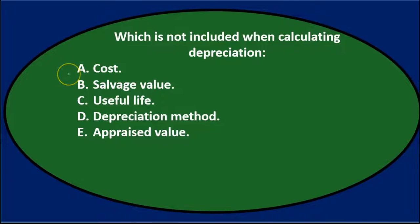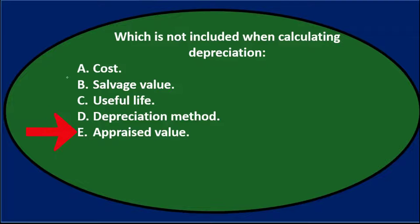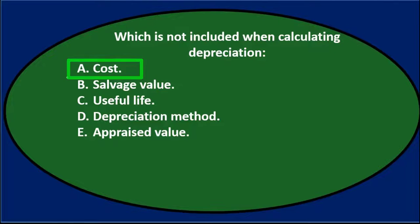Next question: which is not included when calculating depreciation? A: cost. B: salvage value. C: useful life. D: depreciation method. E: appraised value. Let's go through these — which is not included when calculating depreciation? A: the cost. Well, it's going to be pretty necessary — we're going to need the cost to calculate depreciation.